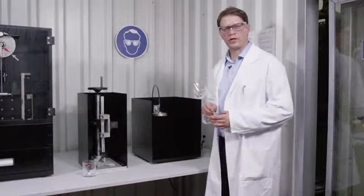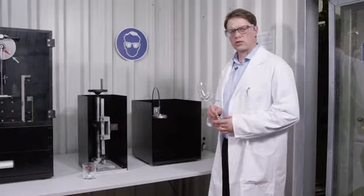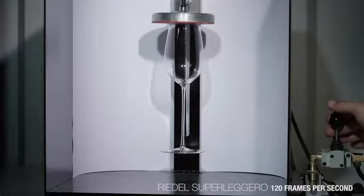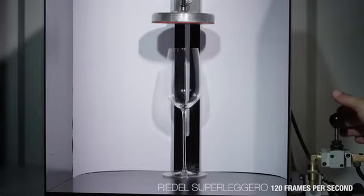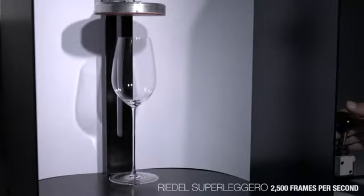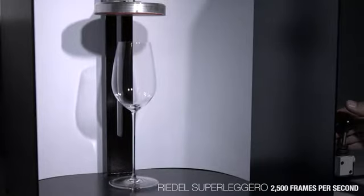The third test performed is the Drop Test. The glass is dropped from a height of 50mm onto a metal base. The aim of the test is actually twofold. Firstly, to demonstrate the stability of the stem itself. And secondly, to demonstrate the stability of the joint between stem and bowl.